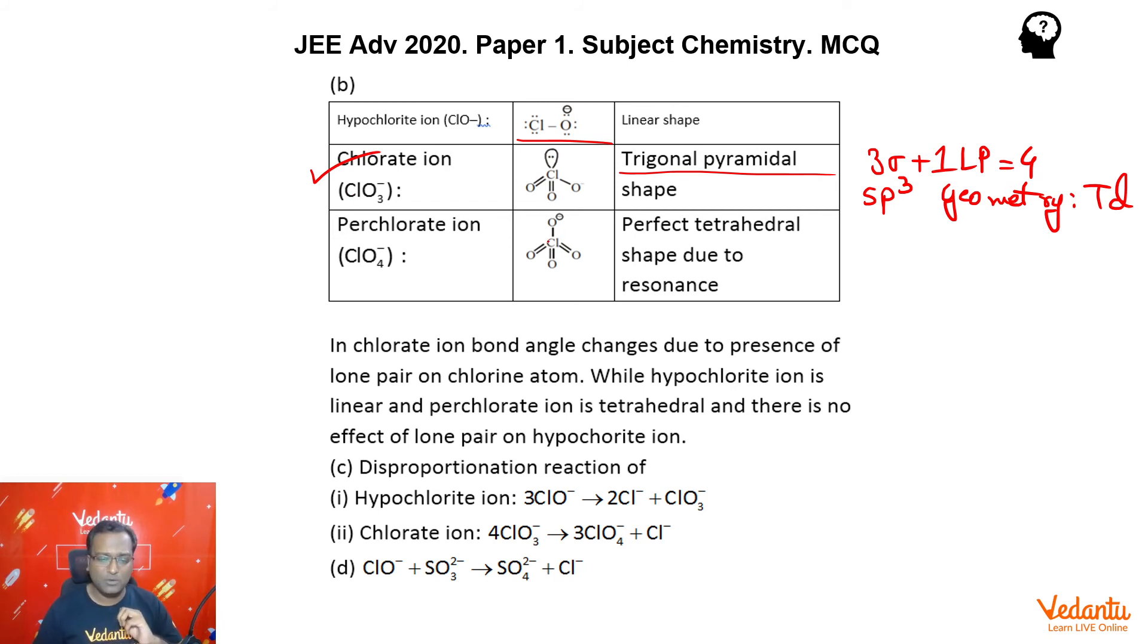Next, perchlorate ion, you can see that there are four sigma bonds. That means sp3, that means geometry as well as the shape, both are tetrahedral and therefore, lone pair does not affect the shape of perchlorate at all. Now, the next option was about disproportionation.